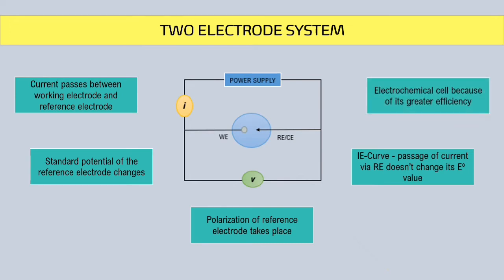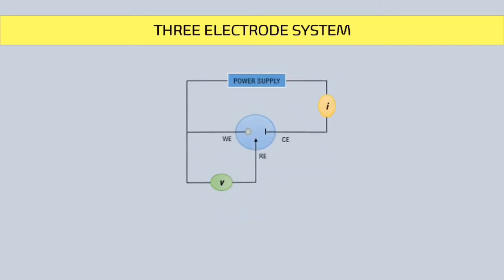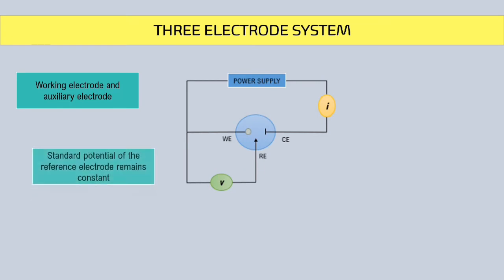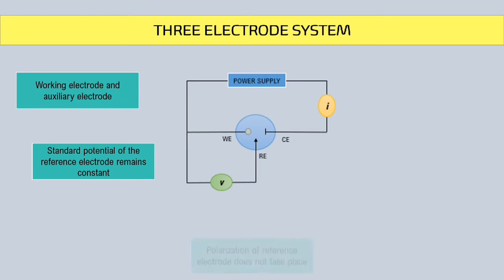For three-electrode system, the current flows between working electrode and auxiliary electrode. Since current does not flow through reference electrode, the standard potential of the reference electrode remains constant and polarization does not take place.